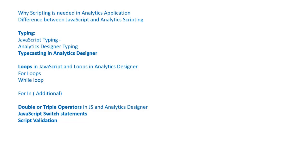What we are going to cover here: JavaScript typing versus Analytics Designer typing, data type conversion — how it happens between different data types like number to string and string to number. Then we'll look at different loops available in Analytics Designer like for loops and while loops. There is also an additional loop called 'for...in' that we will see. We'll also cover double and triple equals operators, switch statements, and lastly script validation.